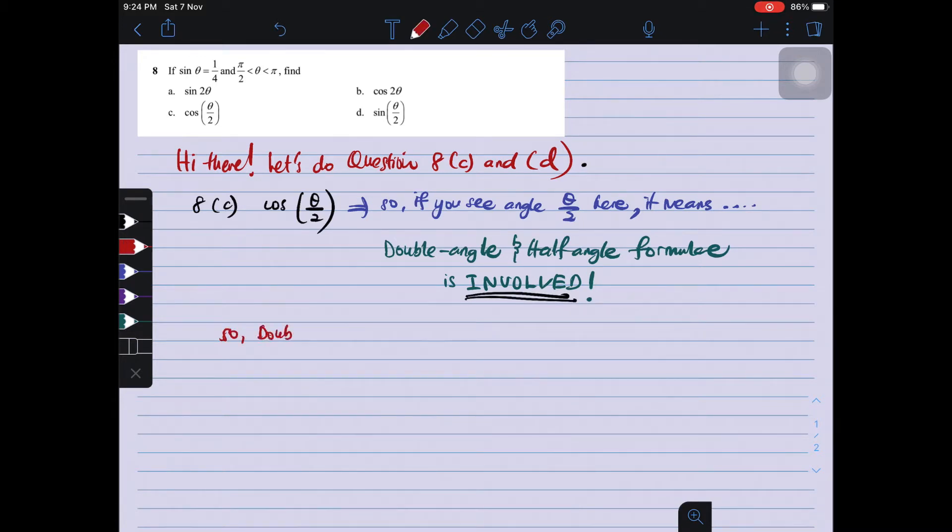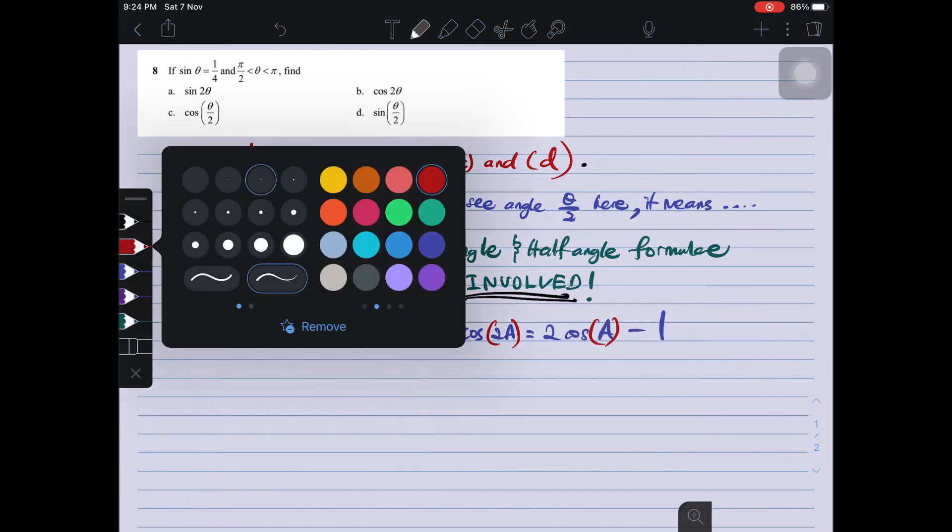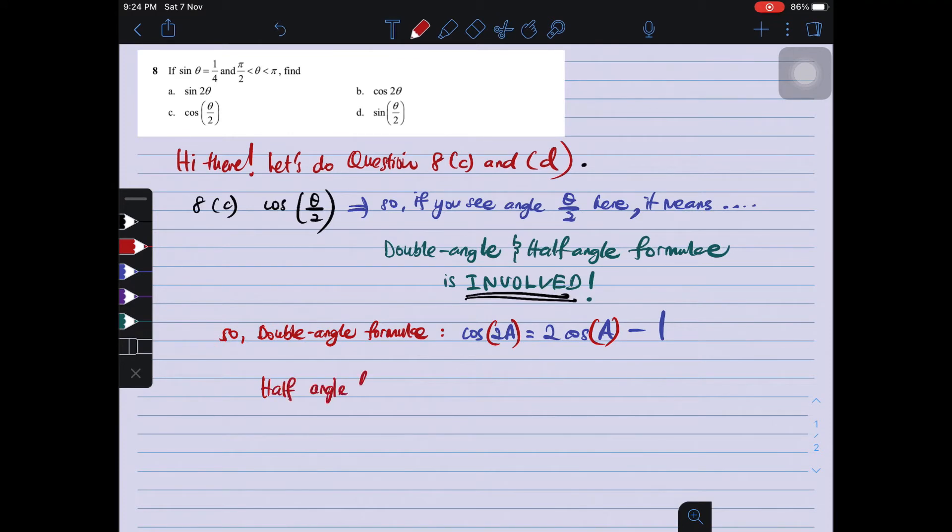Okay, so we start with double angle formula first. So, cos 2A equals to 2 cos² A minus 1. Half angle formula, which we will have cos A equals to 2 cos² A/2 minus 1.